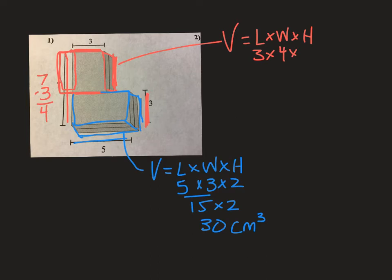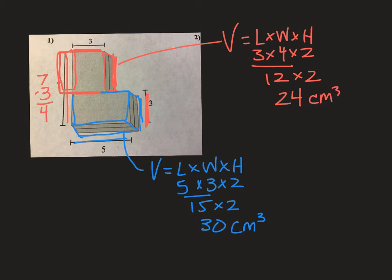The height, remember, is shown in layers — I can see 2 layers. So the only thing that's a little tricky is that for one of the prisms you have to do a little calculating to find an exact measurement. Length times width times height: 4 times 3 is 12, and 12 times 2 is 24 cubic centimeters.